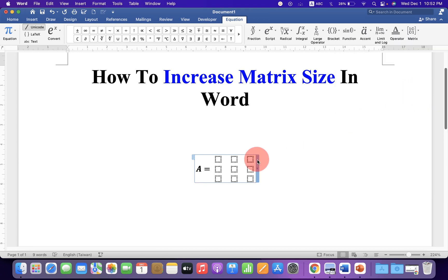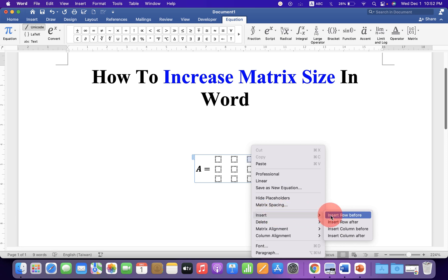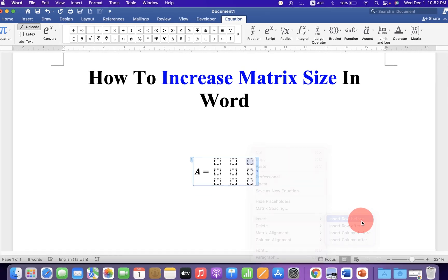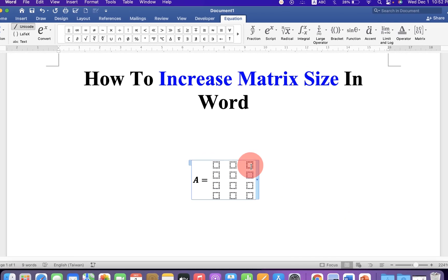Now to increase matrix size, click on any box, then right click. Under the Insert option here, you will see various options like Insert Row Before. So if you click on the first option, you will see that the row has been inserted.